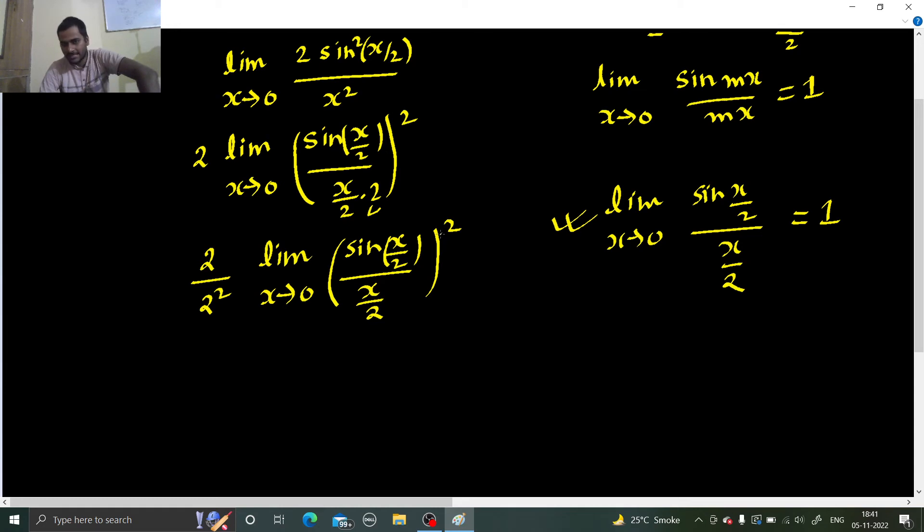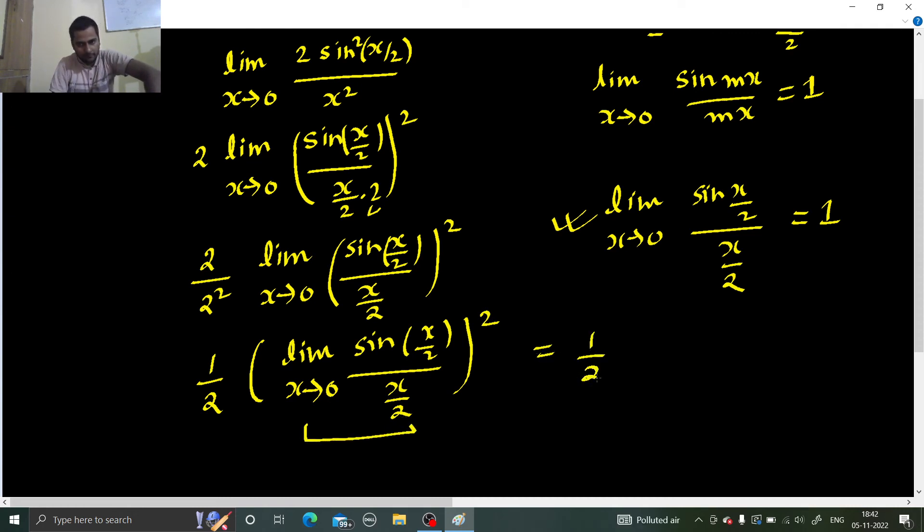And what is the function inside which this limit is there? The function is square function. So we need to check whether that is continuous or not. If yes, then we can move inside. And this is 1 by 2. This limit can move inside. So limit x tending to 0, sine x by 2 divided by x by 2 squared. Now this you all know is going to be 1. So you are finally going to get 1 by 2 into 1 square and this gives you 1 by 2.